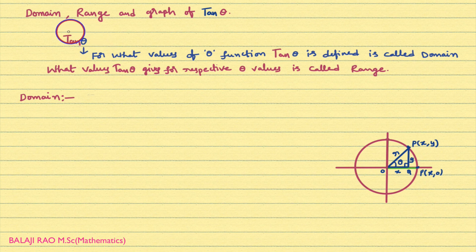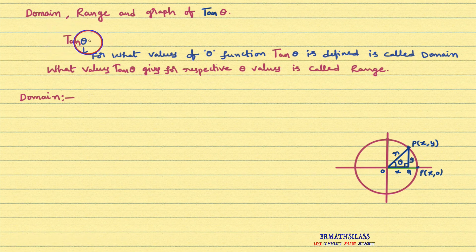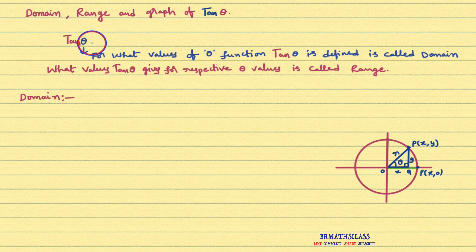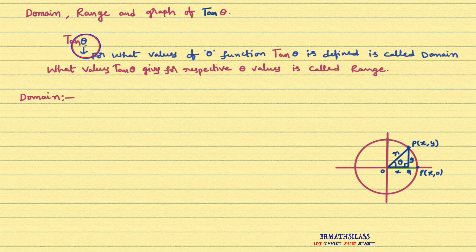You observe here tan theta — in this two things are there. One is theta, another one is tan theta. For respect to theta values, we will get tan theta values. For example, theta is 45 degrees. Tan theta is what? Tan 45 degrees is 1.